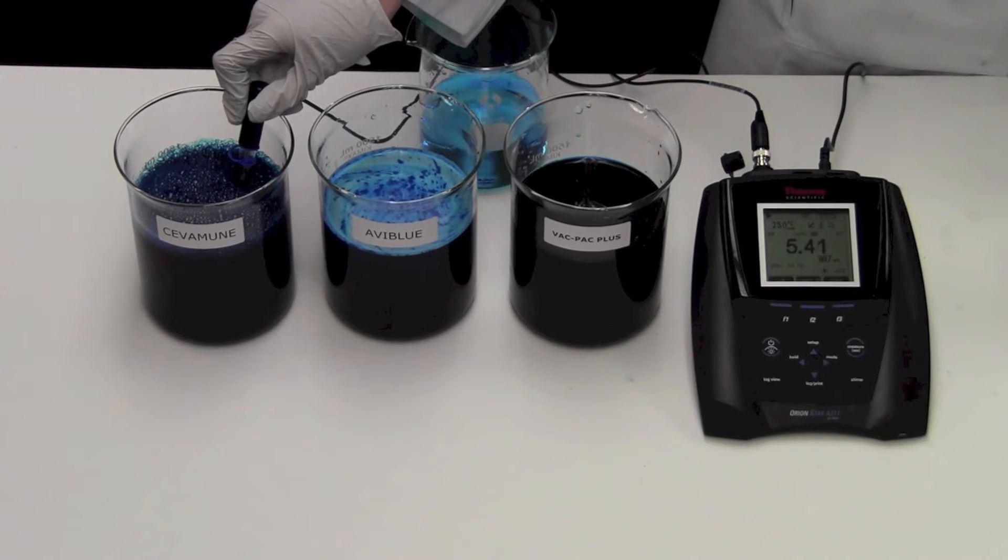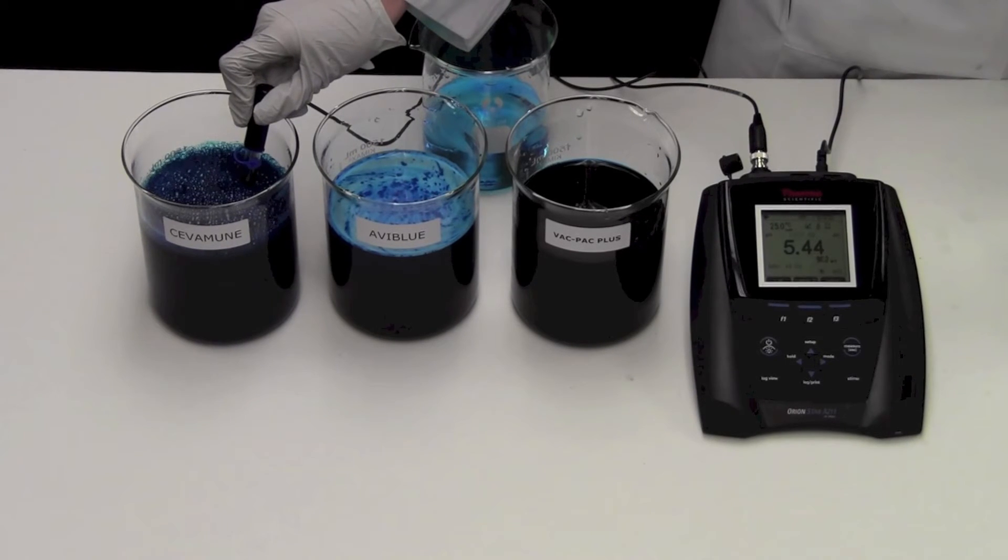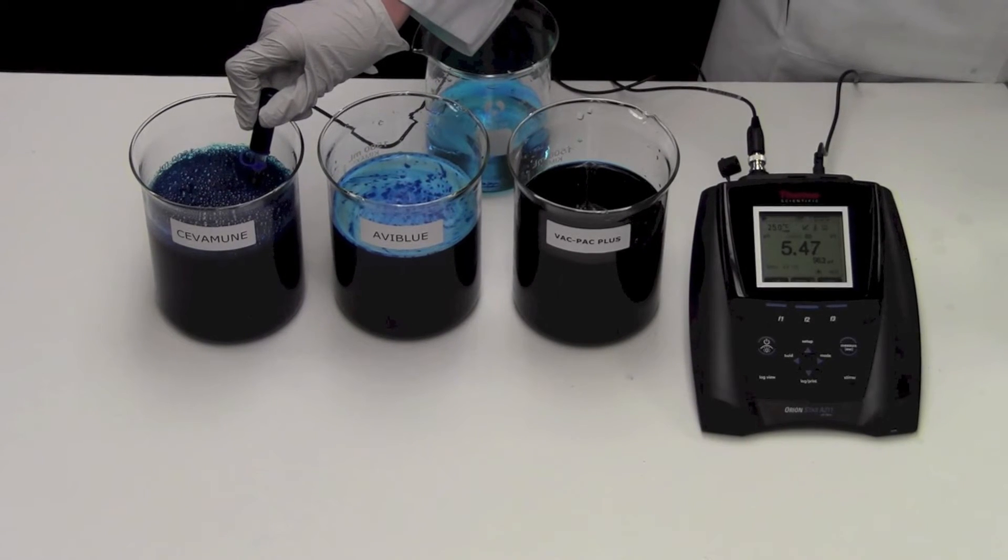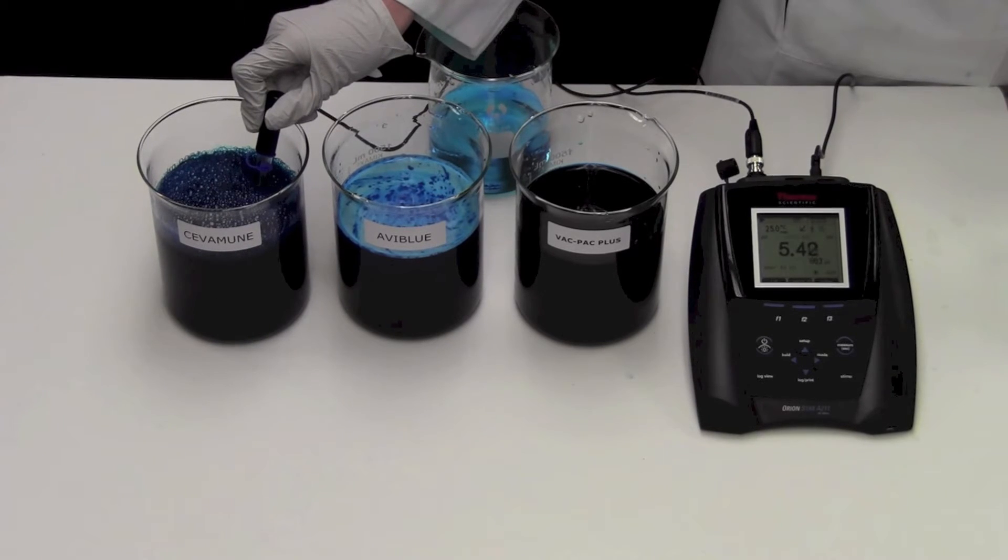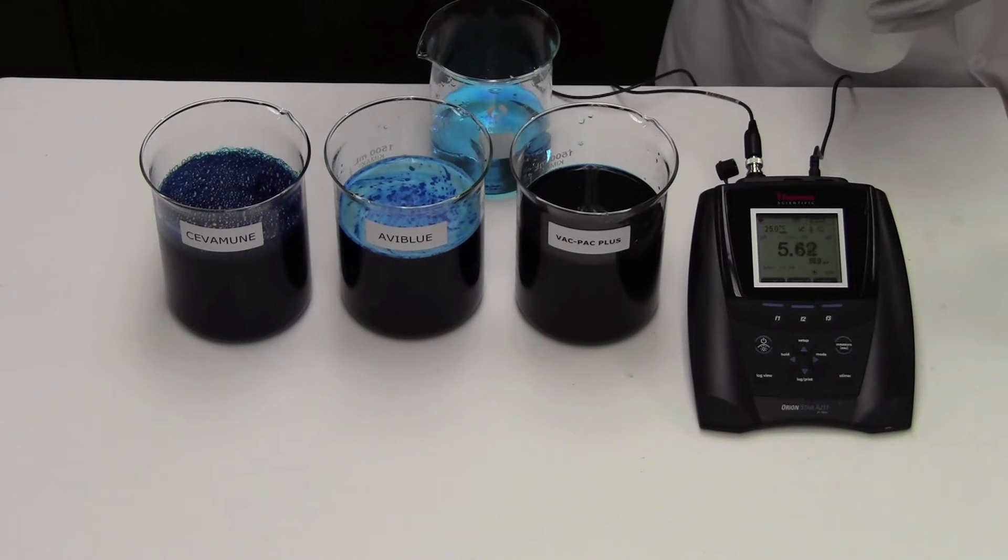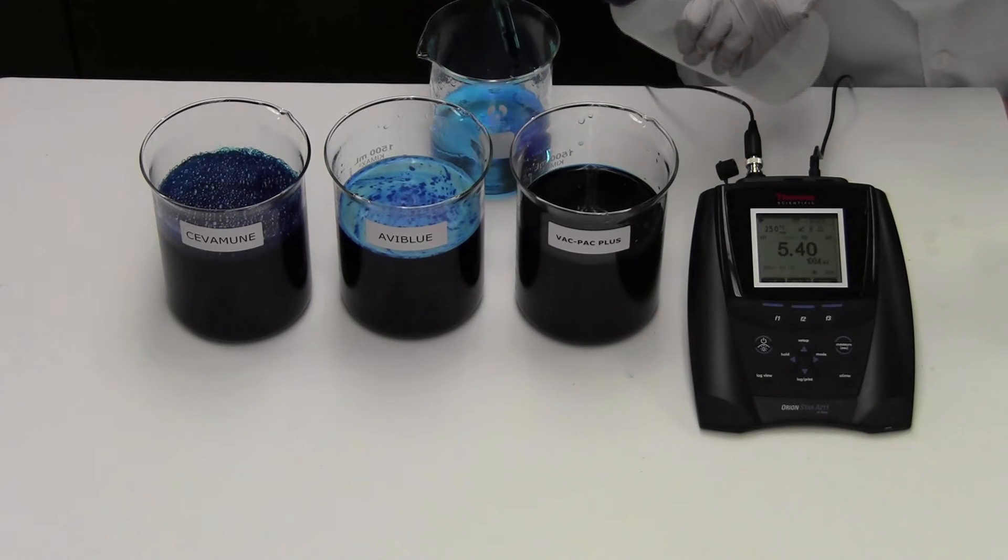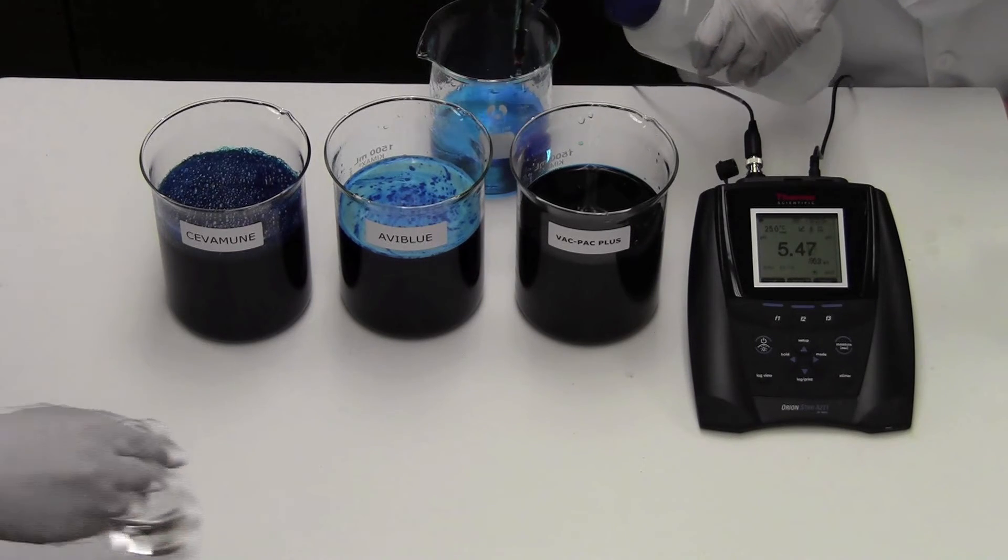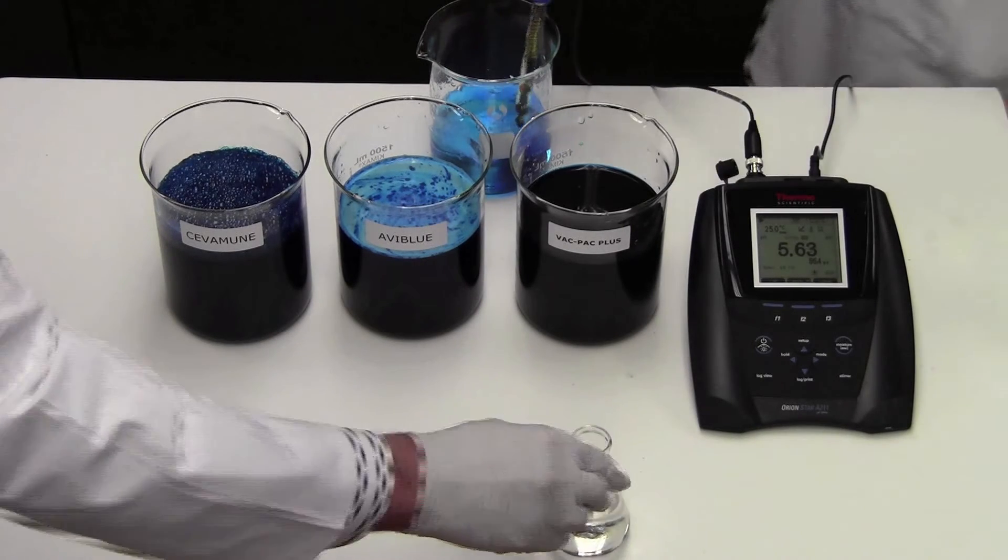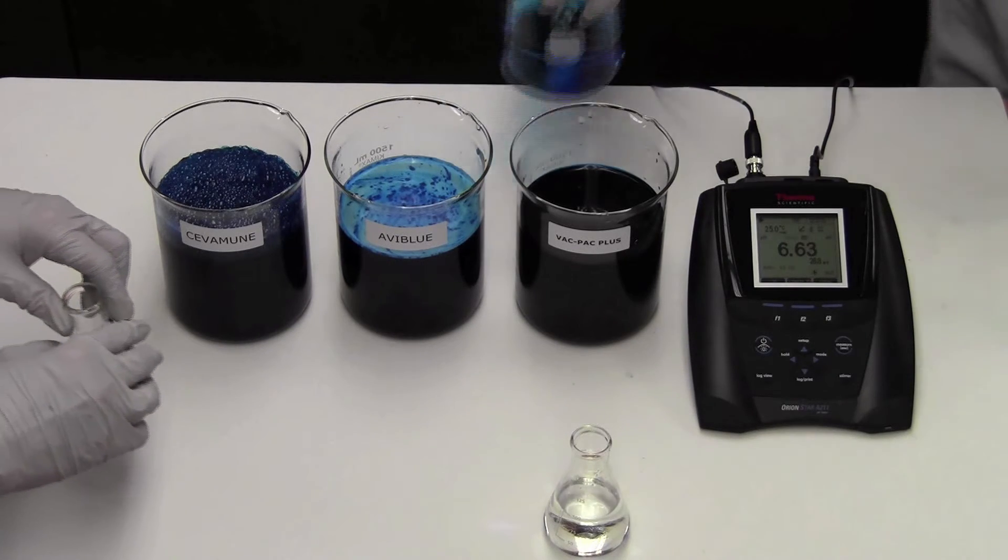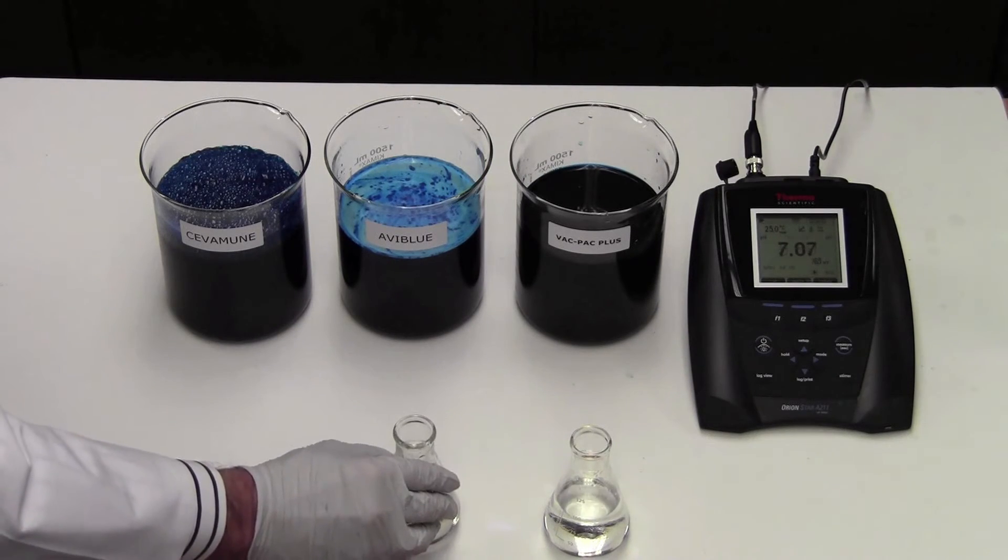You may notice a different intensity in the product's colors. Testing the wavelengths with a UV spectrophotometer confirms that all three products contain the same water colorant. When you dilute the stabilized vaccine into the finished drinking water at the normal 1% concentration, you'll see the different color intensities more clearly.